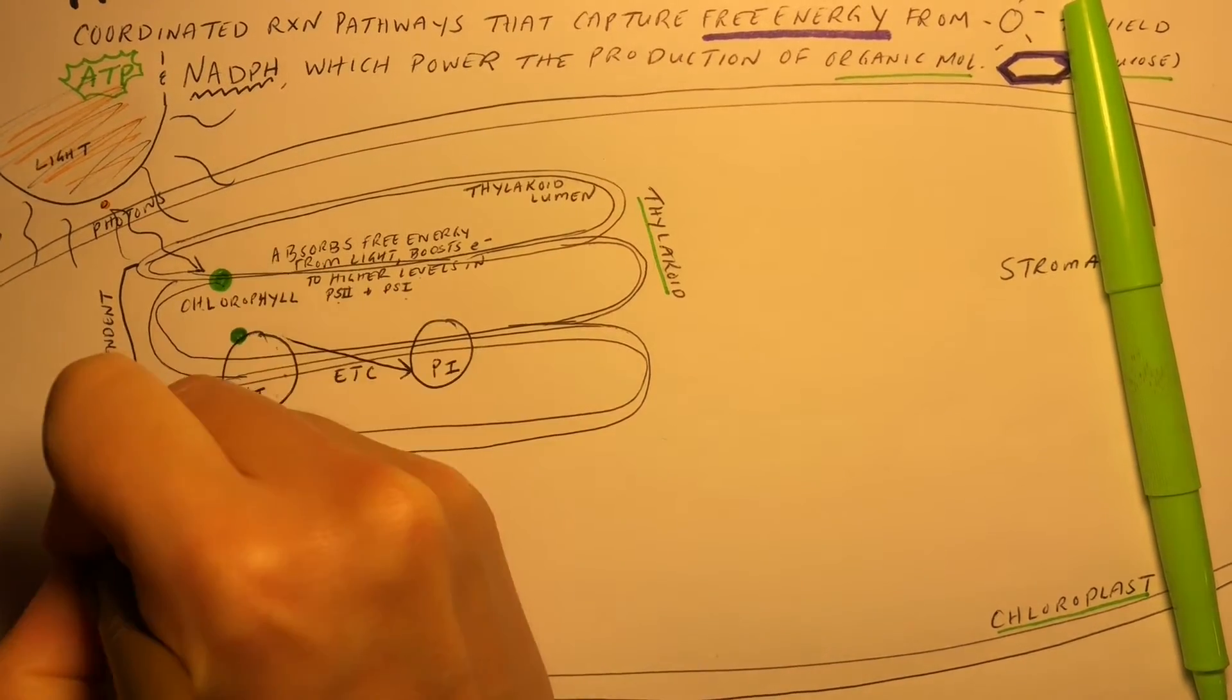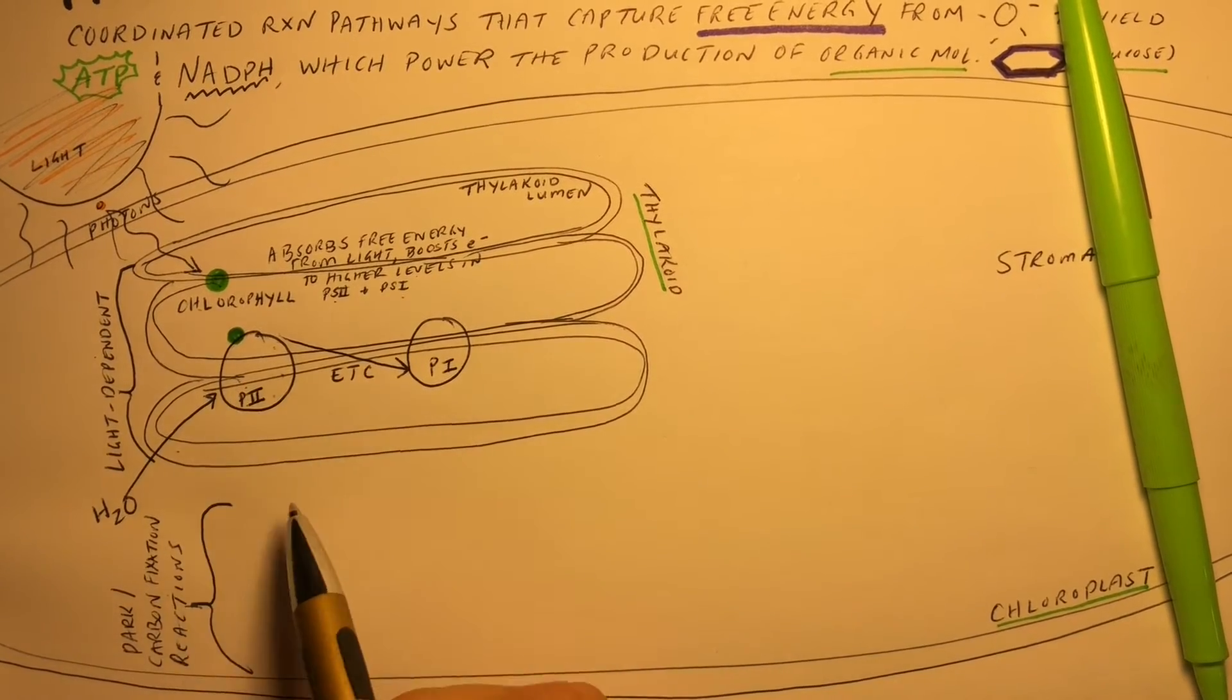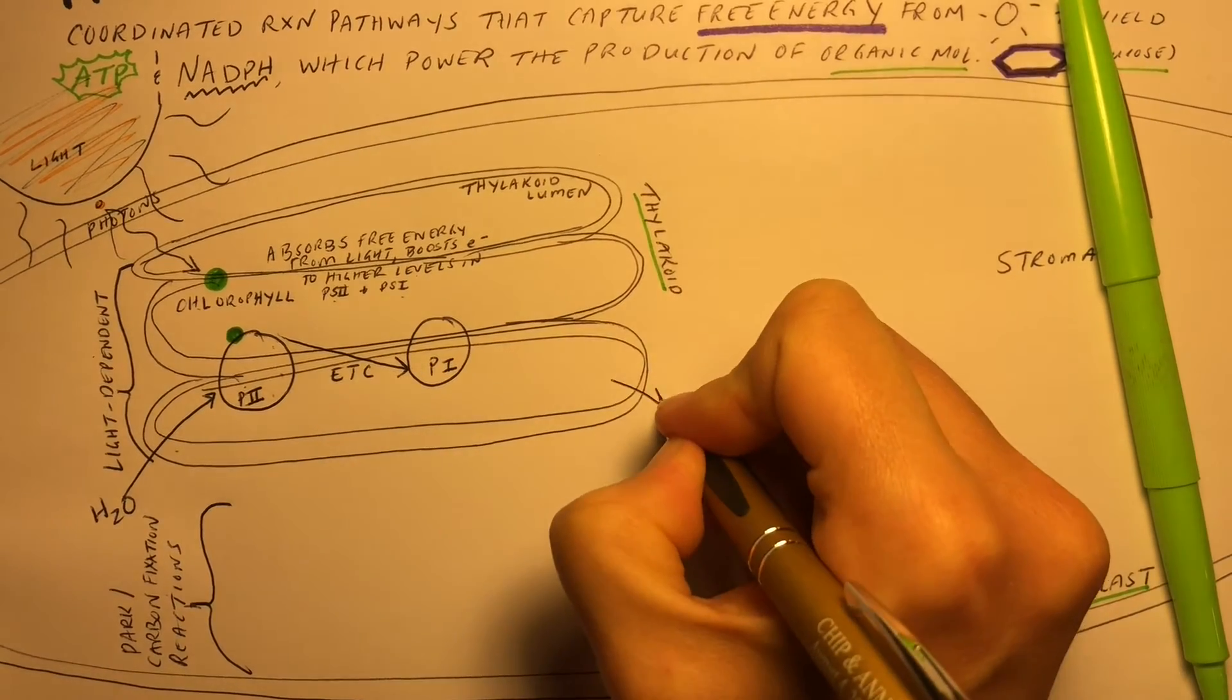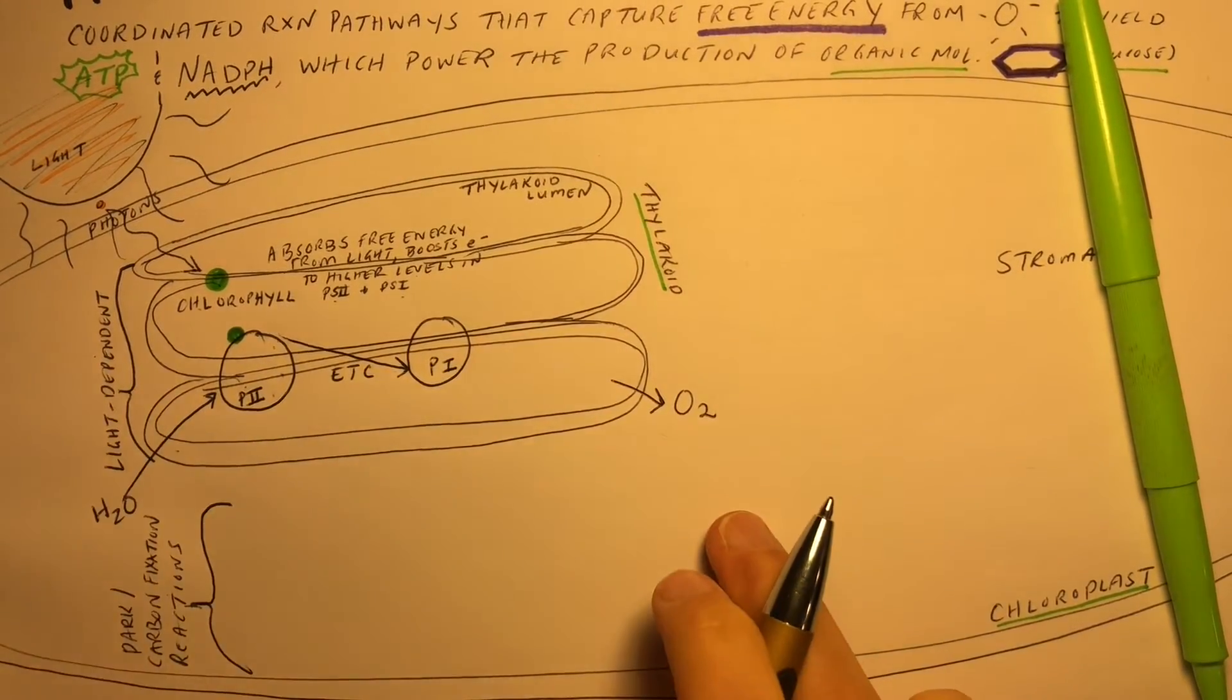Water comes in here. Water will be split to release electrons. This will then produce hydrogen ions as well as oxygen. It's important to note that oxygen is formed during the light-dependent reactions of photosynthesis.